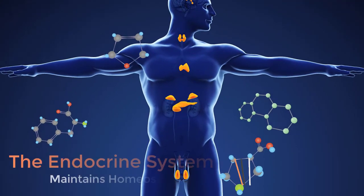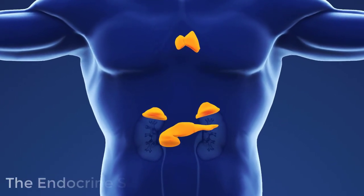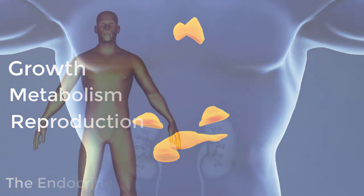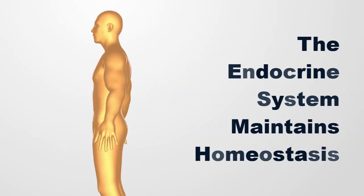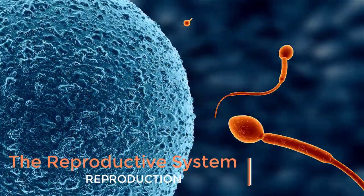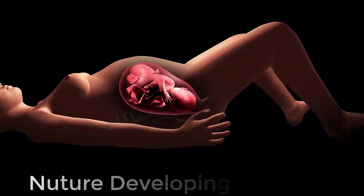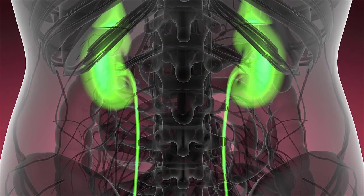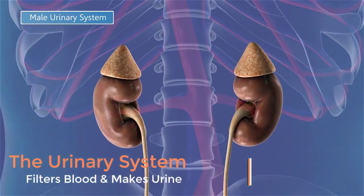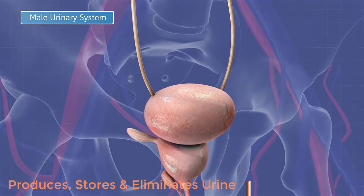The endocrine system influences the functions of the body using hormones. Glands from the endocrine system secrete hormones that regulate many processes such as growth, metabolism, and reproduction. The endocrine system works together with the nervous system to maintain homeostasis. The reproductive system allows us to make offspring — it functions to produce egg and sperm cells, to transport and sustain these cells, and to nurture developing offspring. The urinary or renal system produces, stores, and eliminates urine. The kidneys make urine by filtering wastes and extra water from the blood.